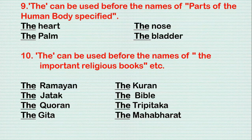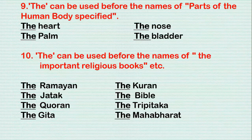Rule 9: 'The' can be used before the names of specified parts of the human body. For example: the heart, the nose, the palm, the bladder, etc.